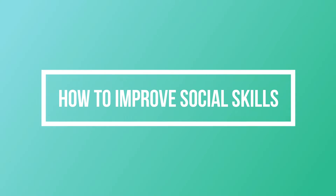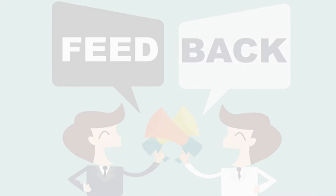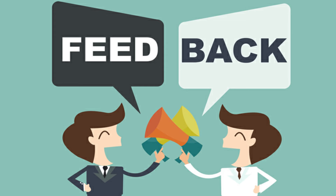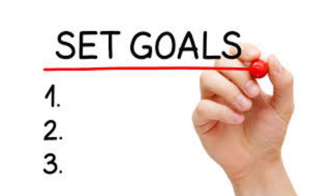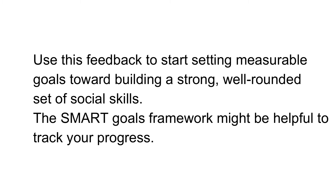Here are several ways to improve your social skills. First, get feedback — it can be helpful to ask trusted friends, mentors, or managers to provide you with honest feedback about your areas of improvement. Second, set goals — use this feedback to start setting measurable goals toward building a strong, well-rounded set of social skills.